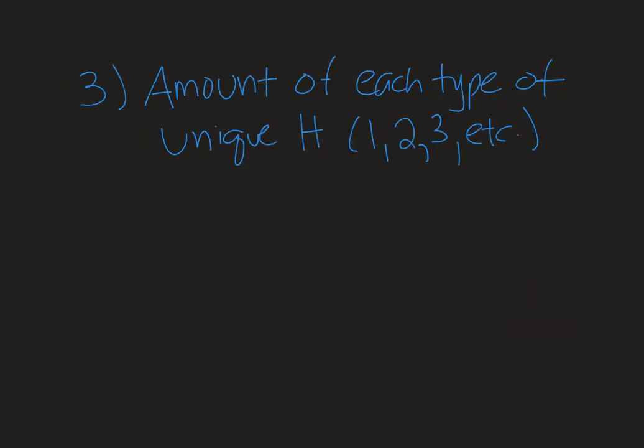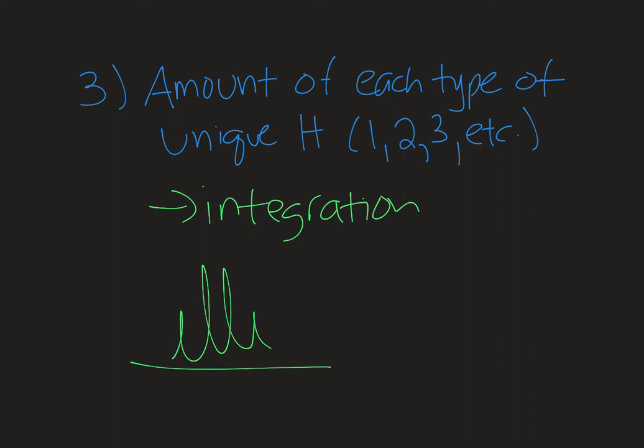A third piece of information that I can get from the proton NMR is the amount of each type of unique proton. Say we have a type of proton HA, we can literally integrate the area under that signal, under the peak, and determine the relative amount compared to other protons on the molecule. This is just really the mathematical operation of integration. Let's say that we have a quartet somewhere on our NMR and the computer will integrate the area under that curve and it'll give us some number that compares to the other numbers and lets us determine the relative amount of each type of proton.